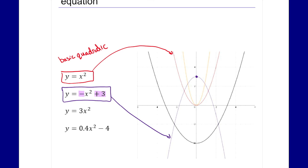Our next one is y equals 3x squared. The only variable here is the a value, which is three. When a is three, that means we have a vertical stretch, so I want to find a quadratic that is stretched — it should appear skinnier than my basic red one. I do see that: it is this yellow one. We can see that nothing else has changed except it looks skinnier compared to the red one.